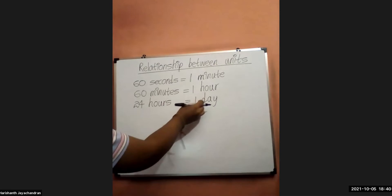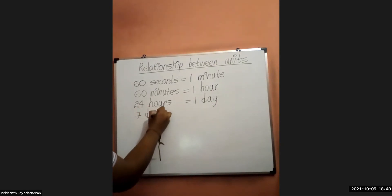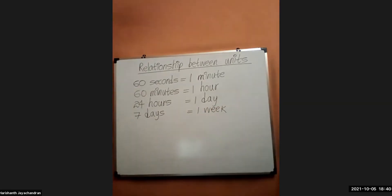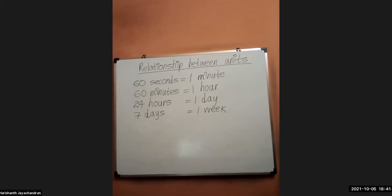Seven days is what we would consider as one week. Normally when we take into consideration of a month, we can probably say four weeks or five weeks, but when it comes to calculations in maths, we would consider it as four weeks. When you need to figure out the total number of days in a period of months, we should take the number of days in a month as 30, and then only do all the relevant calculations.